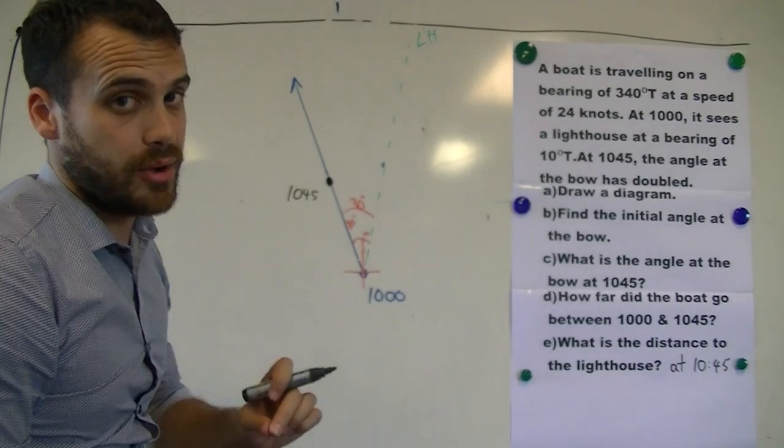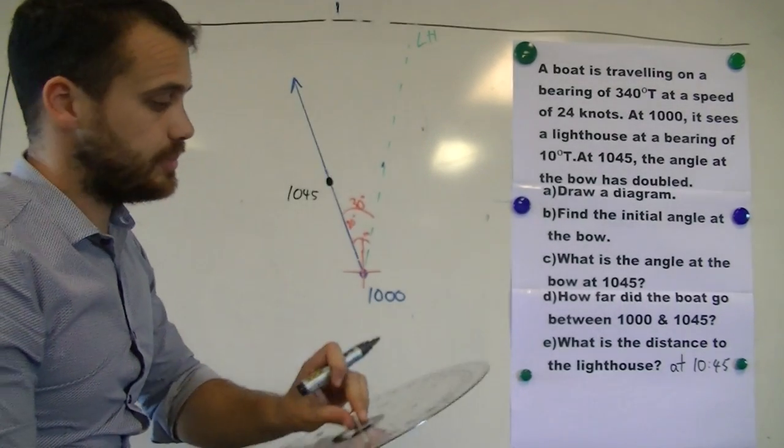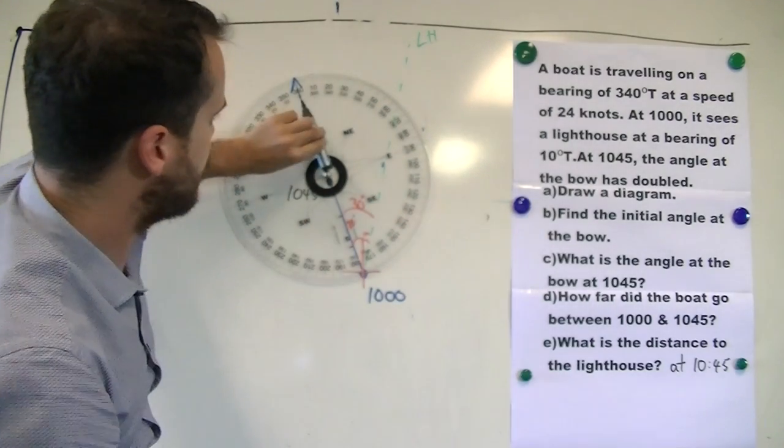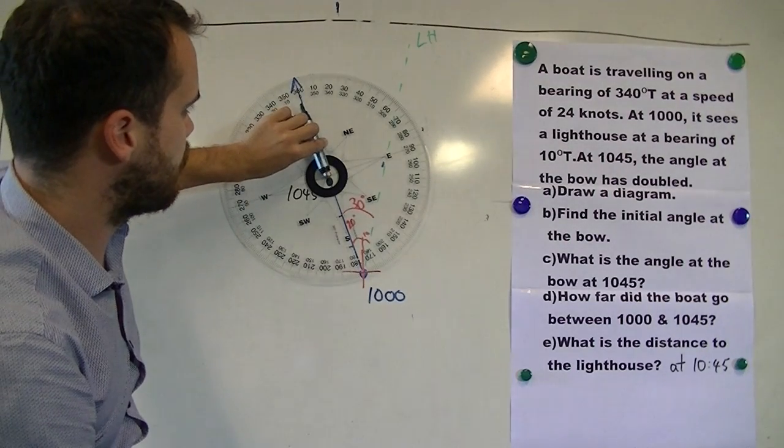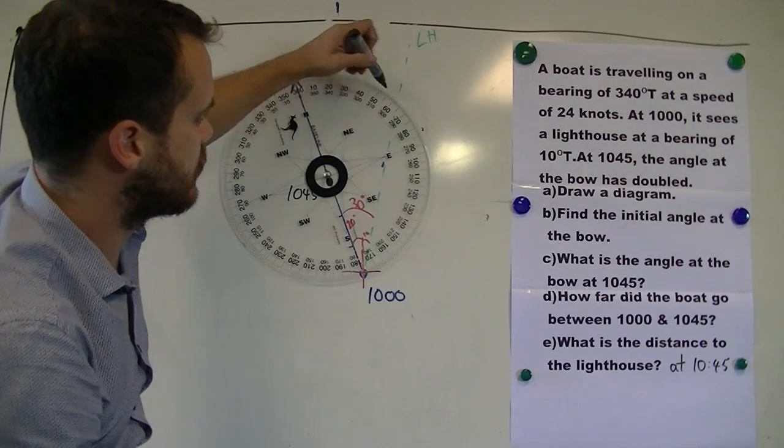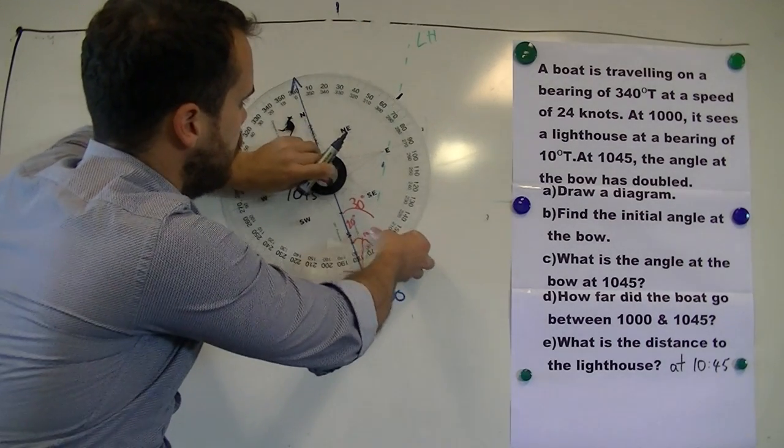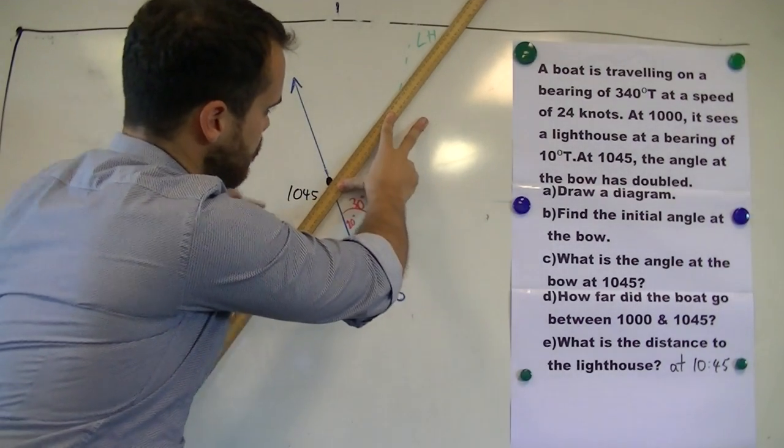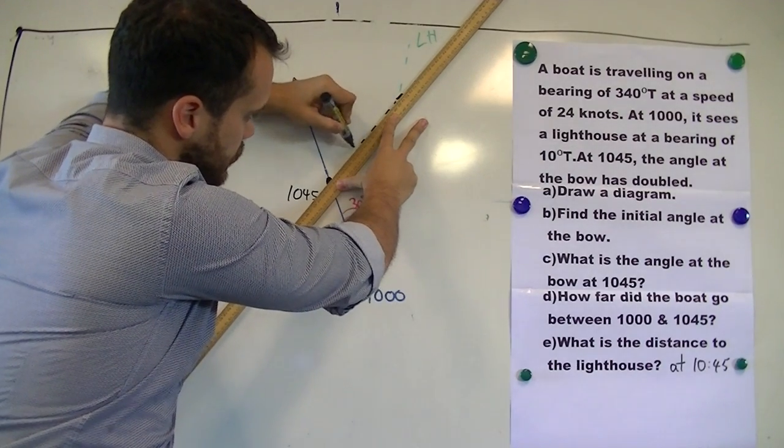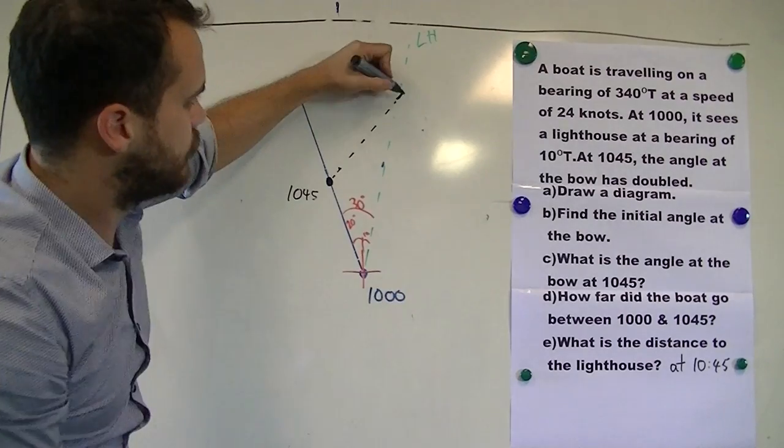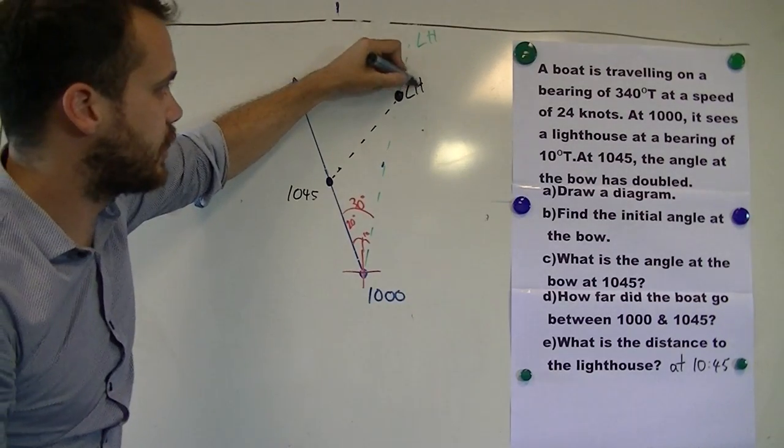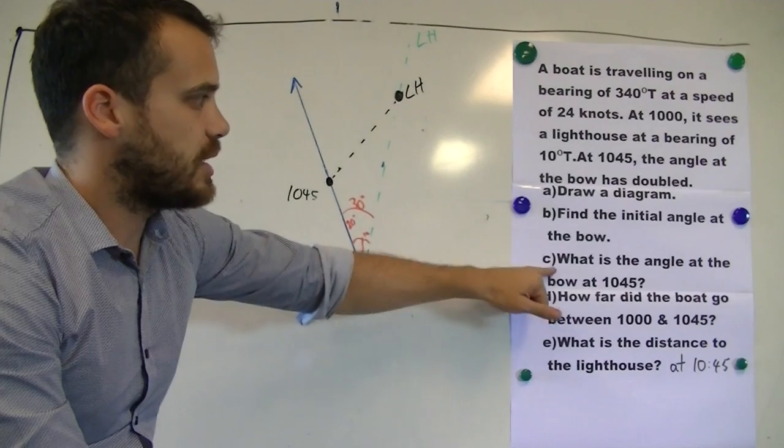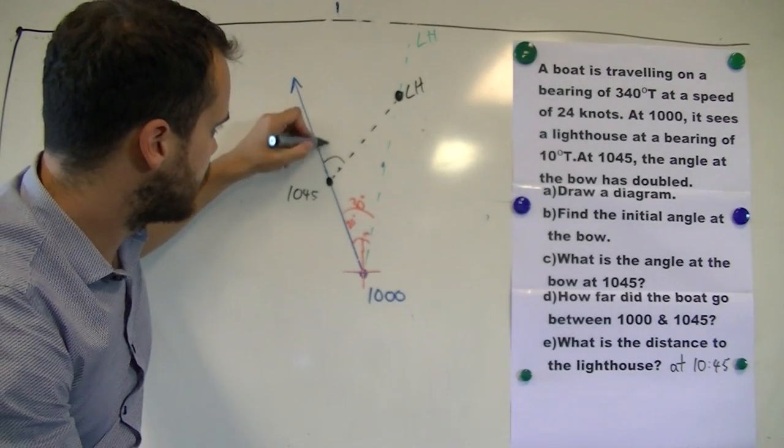Our angle at the bow is 60 degrees. So when you do this bit, start here, start with your zero line here, and the angle at the bow move from there to 60 degrees. There's our angle at the bow of 60 degrees. That means that at 10:45, our lighthouse appears right there. Now we know where our lighthouse is. There's our complete diagram. We've found the initial angle at the bow. We've also found the angle at the bow at 10:45, 60 degrees.